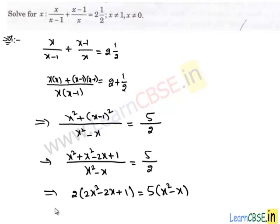Let us distribute these inside the bracket. Now we have 2 times 2x square is 4x square, 2 times negative 2x is negative 4x, and 2 times 1 is 2. And on RHS we have 5x square minus 5x.